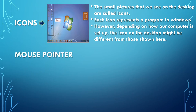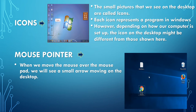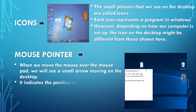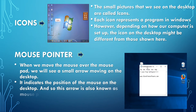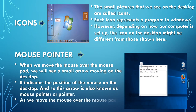Mouse Pointer: When we move the mouse over the mouse pad, we will see a small arrow moving on the desktop. It indicates the position of the mouse on the desktop, and so this arrow is also known as the mouse pointer or pointer. As we move the mouse over the mouse pad, the mouse pointer on the desktop also moves.